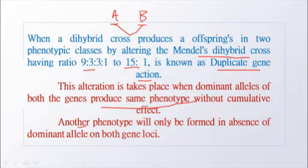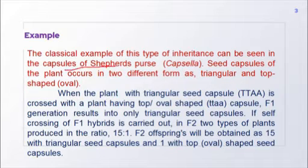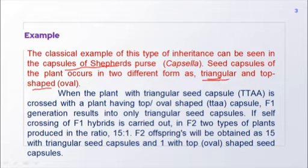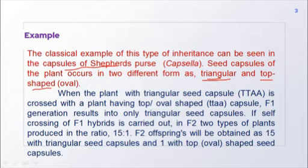The most classical example of duplicate genes is the inheritance of seed capsules in shepherd's purse plant. Capsules of this plant occur in two different forms: triangular and top-shaped (oval). Instead of four offspring types, it will form only two types of offspring — one with triangular shaped capsules and another with top-shaped oval capsules.